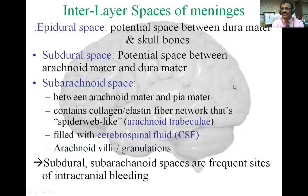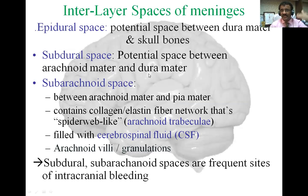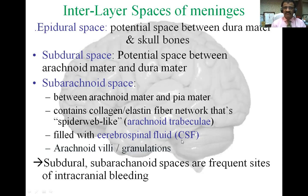Regarding the interlayer spaces of the meninges: the epidural space is a potential space between the dura mater and the skull bone. The subdural space is a potential space between the meningeal layer of the dura mater and the arachnoid mater. The subarachnoid space is between the arachnoid mater and pia mater — very important, as it contains a collagen elastic fiber network like a spider's web and is filled with cerebrospinal fluid. Arachnoid villi and arachnoid granulations provide reabsorption of CSF back into the venous system. The subdural and subarachnoid spaces are frequent sites of intracranial bleeding following head injury.